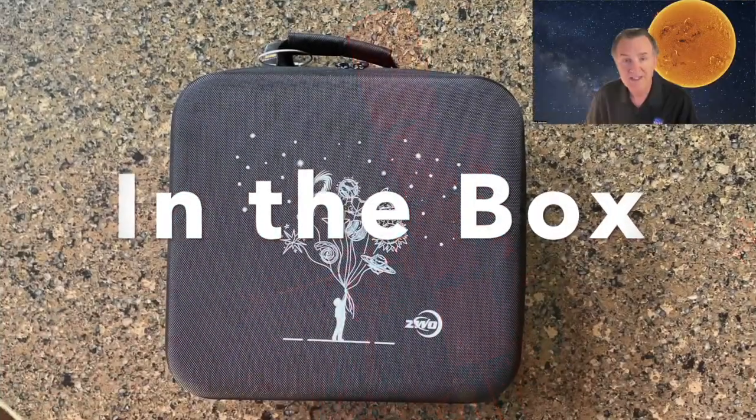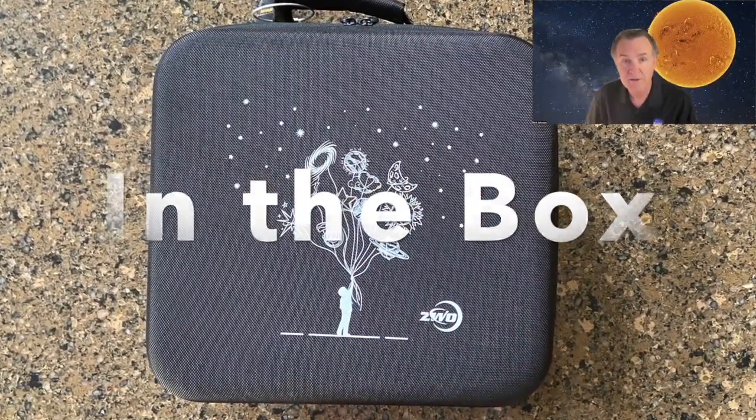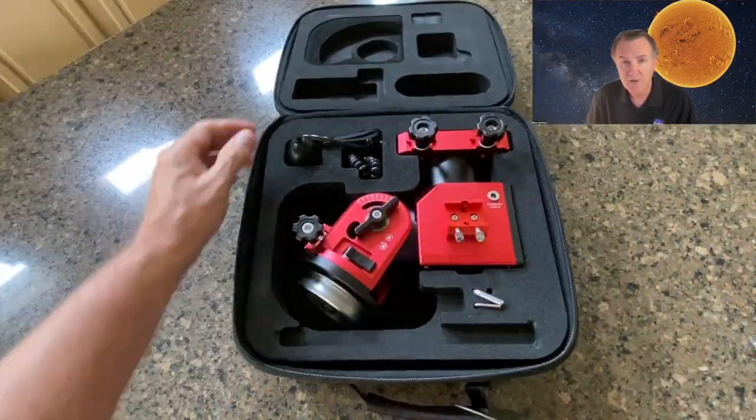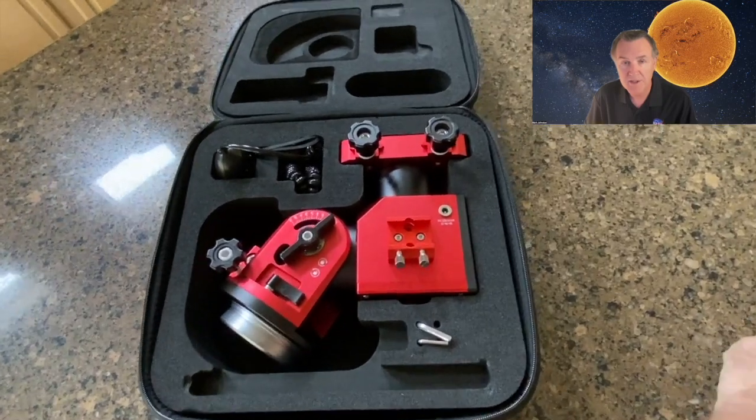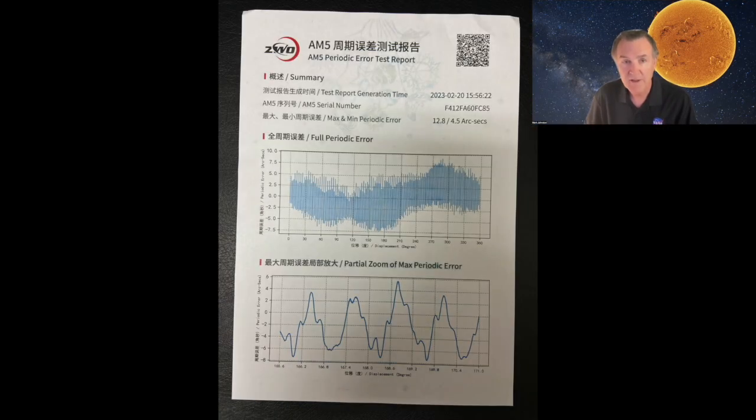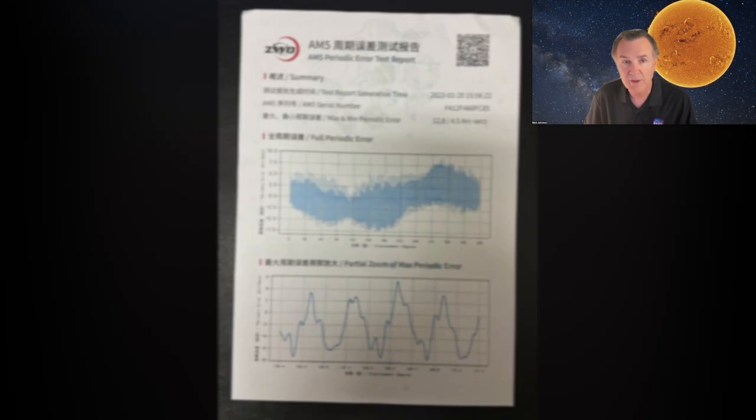The mount comes with a nice carrying case that has foam cutouts for the mount, hand controller, adjustment hex wrenches, and space for an optional counterbalance bar that is not included. The counterweight is also not included. You do also get a test report on the harmonic drive.